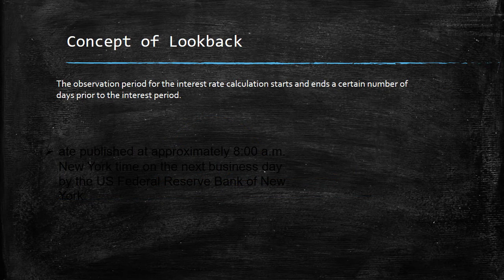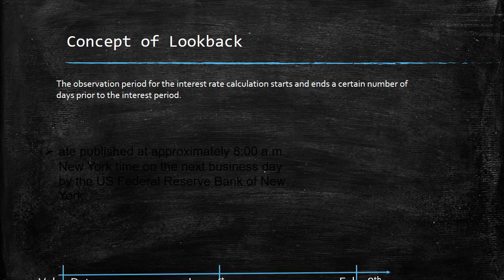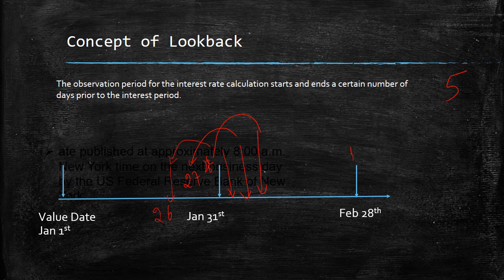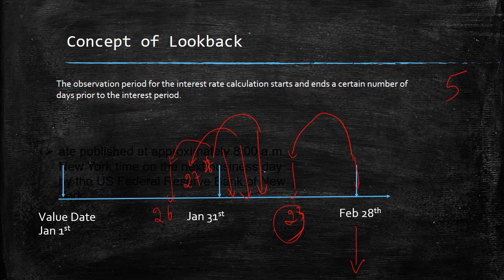A popular approach with a lot of buy-in between borrowers and lenders is the concept of lookback. In lookback, if I have to calculate the interest of the first, I take the rate published by the Fed maybe five days back. So if the lookback days is five days, I will take five days back — in this case Jan 26th. For the 2nd of Feb, I will take the rate of Jan 27th. For 3rd, I will take Jan 28th, and so on. What this means is that when I am on Feb 23rd, I would already know the Feb 28th rate. By the 23rd, the entire rate for all the days of February is made available. This is a very good concept which has a lot of buy-in and would probably be the most adopted approach.